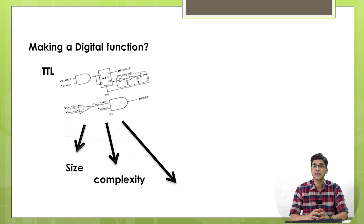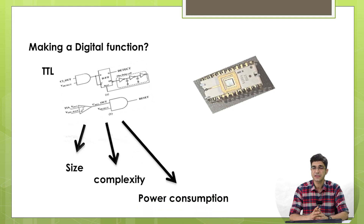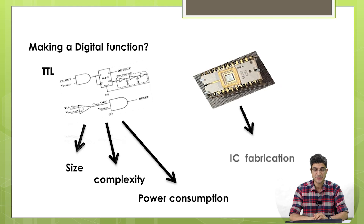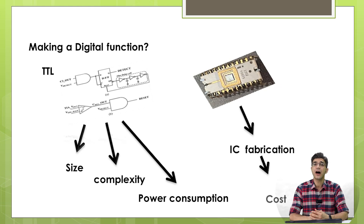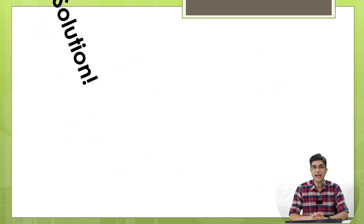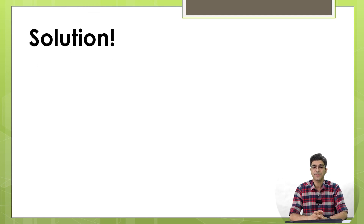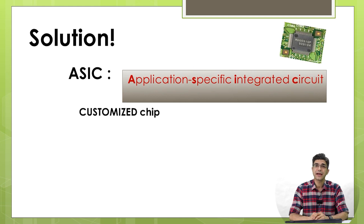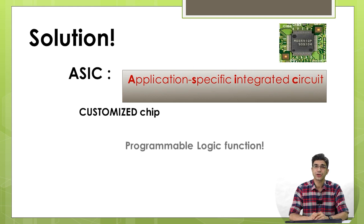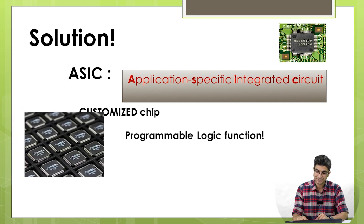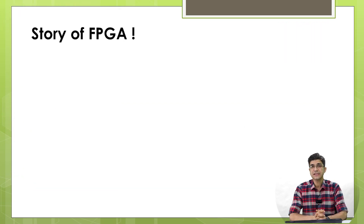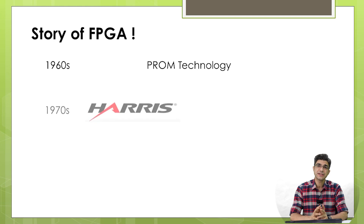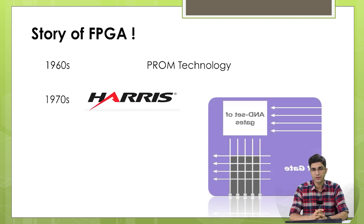The problems of complexity, power consumption, and similar issues led to the solution: ASIC technology, or Application Specific Integrated Circuits, which allows you to make your customized IC. Many years ago in the 1960s, there was a technology called PROM technology.